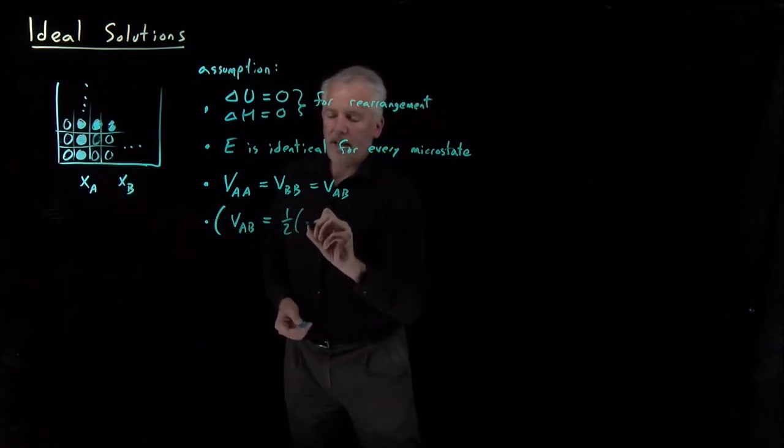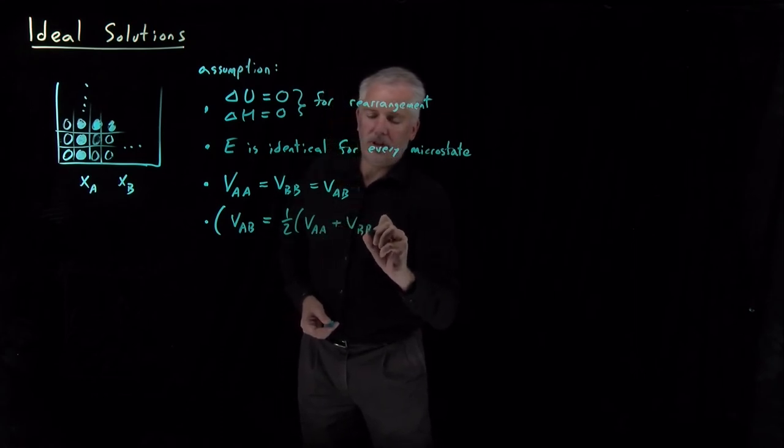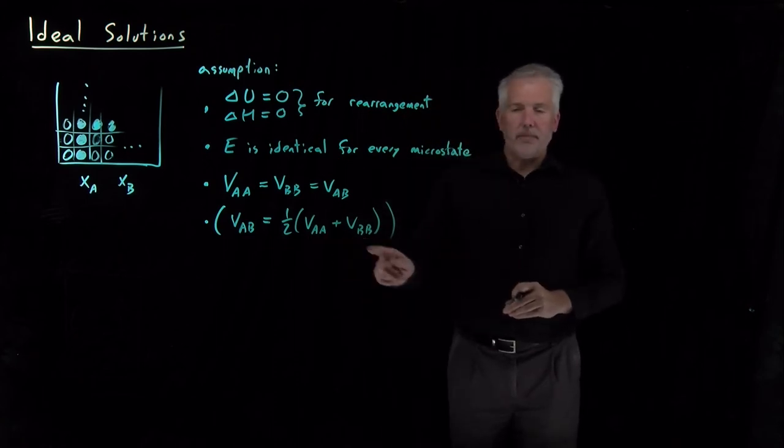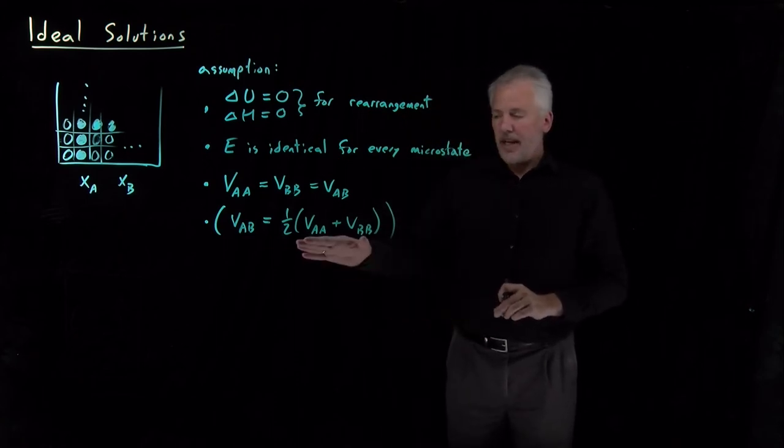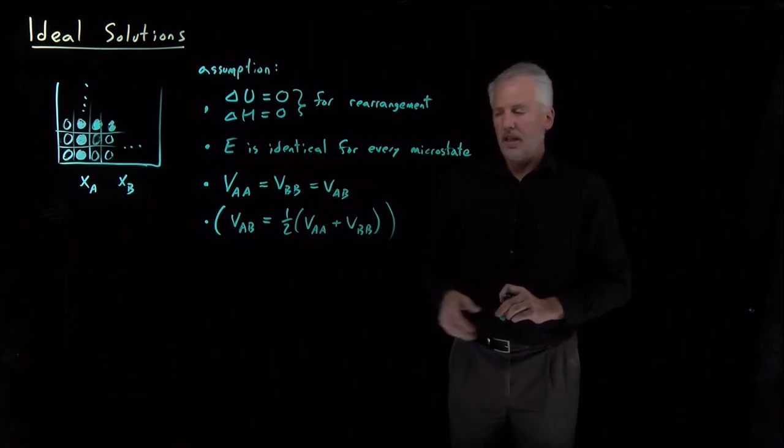as long as that's equal to the average of the two different homogeneous interactions, as long as that's equal to the average of the A-A and the B-B interactions, that's also a good enough condition to guarantee that the energy won't change. Essentially